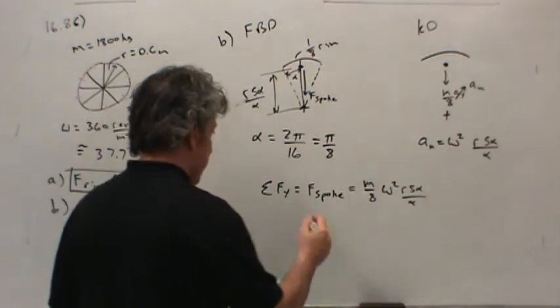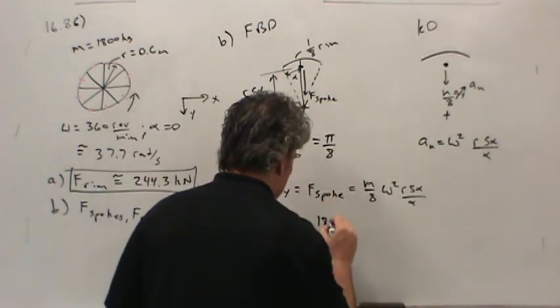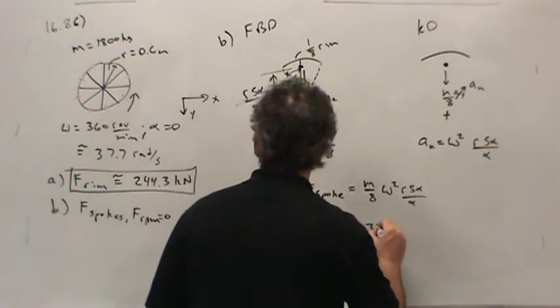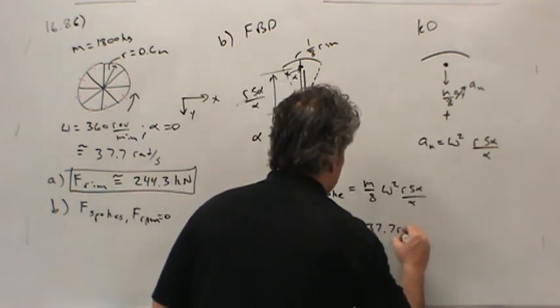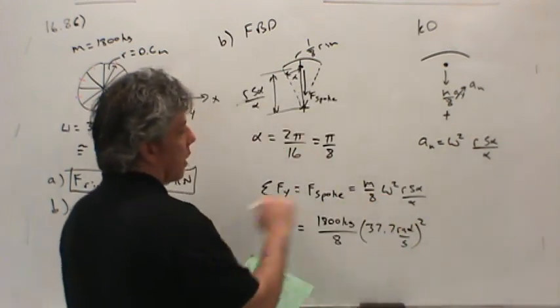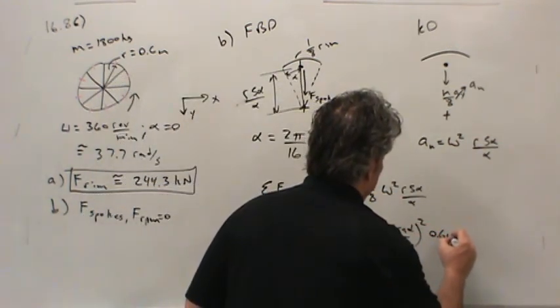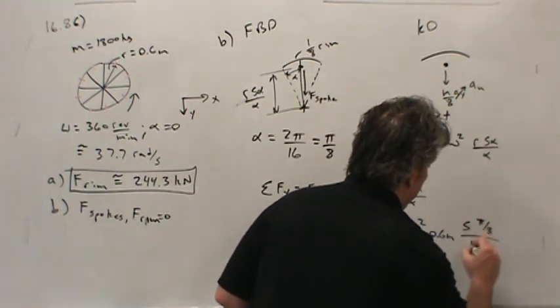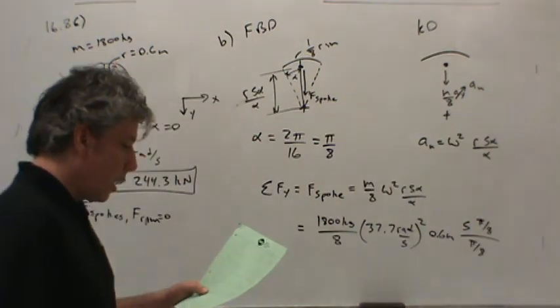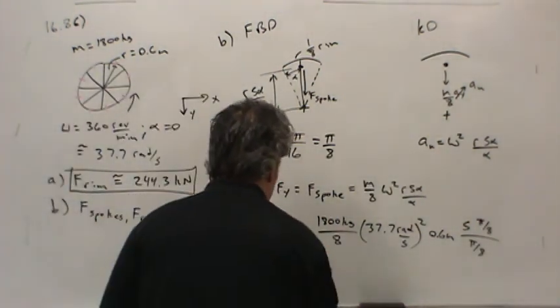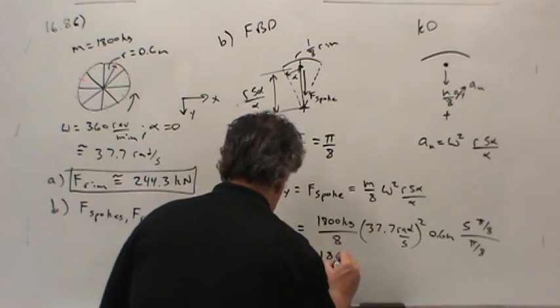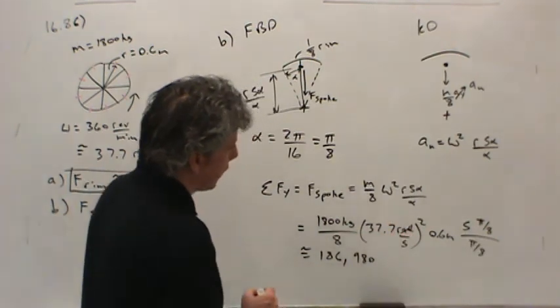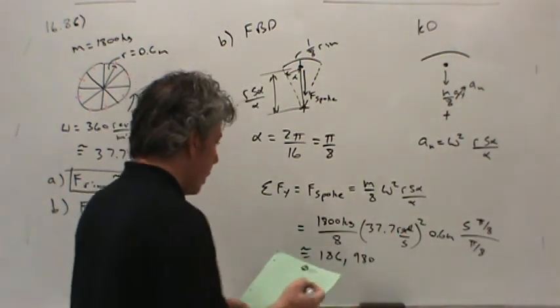So, now all I have to do is plug in numbers. I'm sure to have the result. The mass is 1800 kilograms. It needs to be divided by 8. Angular speed, 37.7 radians per second, quantity squared, that's ω². R is 0.6 meters, and I need sin(π/8) divided by π/8. Plug all that in your calculator and you'll find that the force in the spoke is about 186,980. But what? Well, the radians go away for free just like before, kilograms meters per second squared, so newtons.